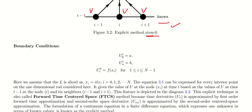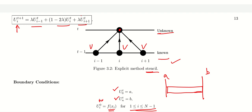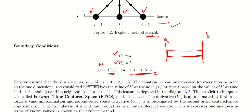The boundary conditions are: u(0, t) = a at the 0th point of the rod and u(N, t) = b at the other end. The initial condition gives u_i^0 = f(x_i) for all intermediate points, where the rod is discretized as x_i = i * delta x, with i going from 0 to N. The basic update equation applies to every interior point on the one-dimensional rod, giving u at node x_i at time t based on values at time t-1 at node i and its neighbors i-1 and i+1.